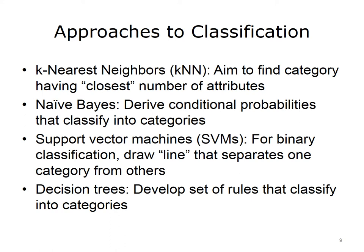Another approach is called Naive Bayes, which uses Bayes' theorem, and we attempt to derive conditional probabilities that classify data according to categories. Another common approach is Support Vector Machines, or SVMs, used for binary classification, where we attempt to model a line through the data that separates one category from the other using vector mathematics. Finally, there are Decision Trees, where we attempt to develop a set of rules that enable us to work through a decision tree to classify elements into categories.